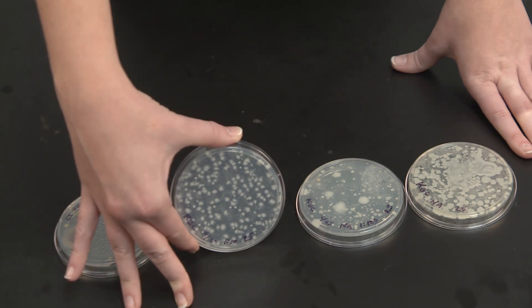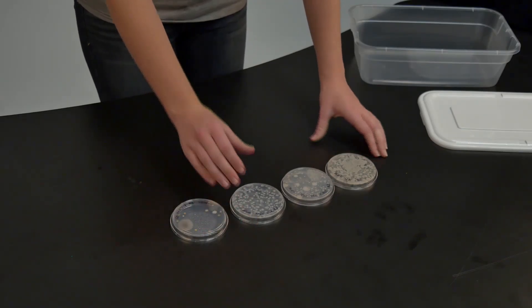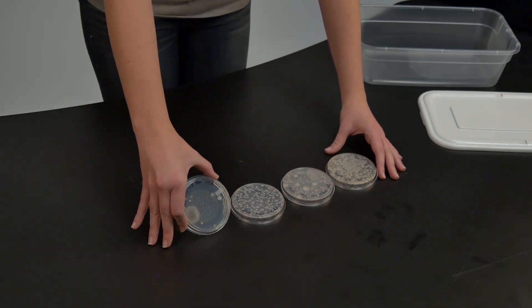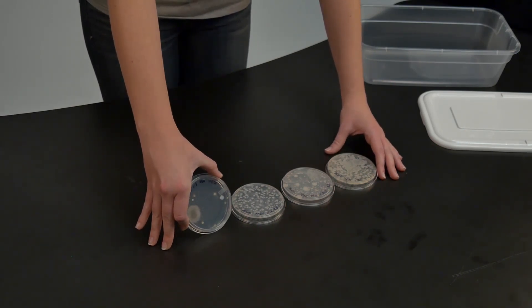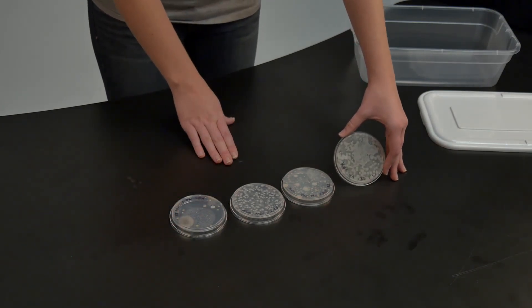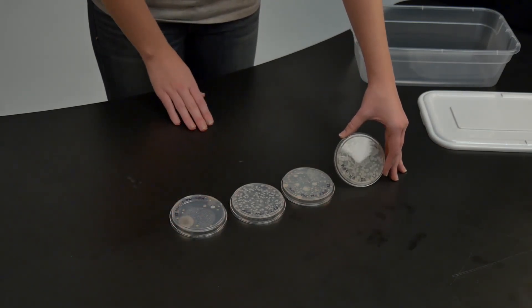The reason why we use a range of 30 to 300 bacterial colonies is because if there are fewer than 30, then sampling error can dramatically affect your results, whereas 300 is such a high number that it becomes difficult to accurately count every single bacterial colony growing on the petri dish.